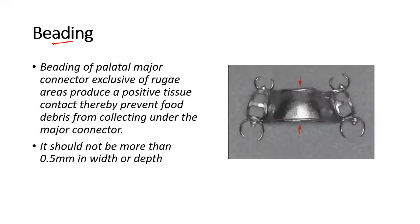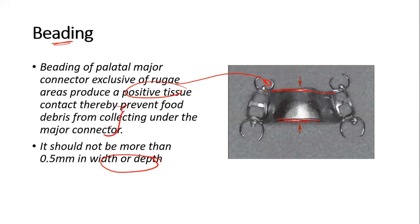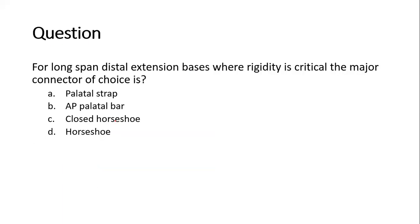The last point is beading. Beading is done in maxillary major connectors to increase tissue contact and provide positive tissue contact. It should not be more than 0.5 to 1 mm in width or depth, and its function is to prevent food or debris from collecting under the major connector.